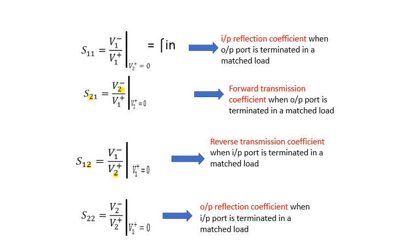Match condition over here means there is no reflection. Similarly, S22 signifies the output reflection coefficient when the input port is terminated with a matched load. That is V2 minus upon V2 plus, keeping V1 plus to be equal to zero.